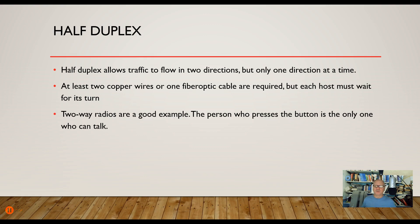Half duplex is when we use simplex traffic but stop it and then go the other direction, so we can have bi-directional traffic, but only one at a time. You would need at least two copper wires for this, because two copper wires make a circuit. With fiber optic, you only need one strand, but in both cases each host has to wait its turn. Two-way radios are a great example — you press the button to talk and release it to listen.